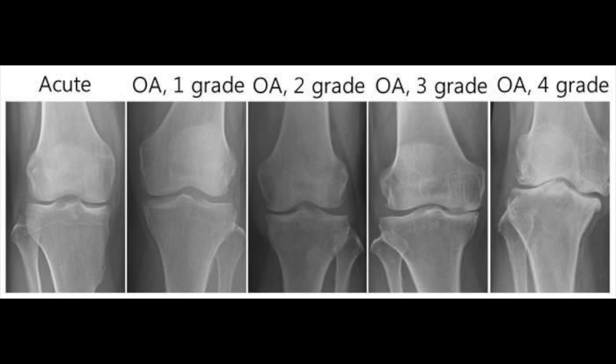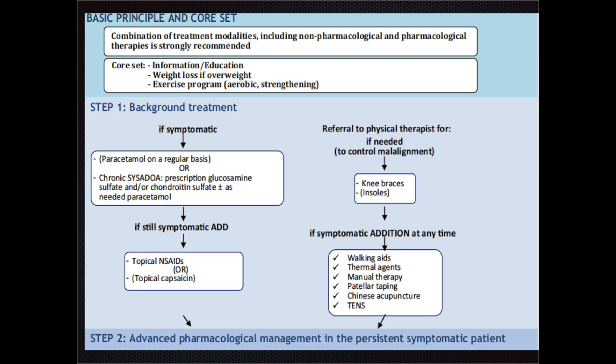After confirming the diagnosis of osteoarthritis, ruling out other causes of knee pain and confirming the diagnosis on the basis of radiological examination, and looking at the grades of osteoarthritis — grade 1 to grade 4 — we first of all start our treatment with non-pharmacological and pharmacological approaches.